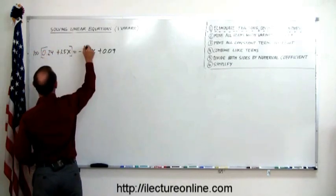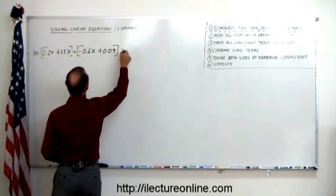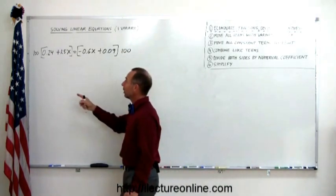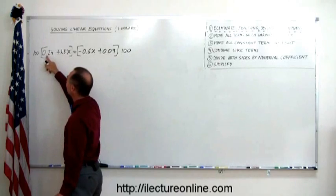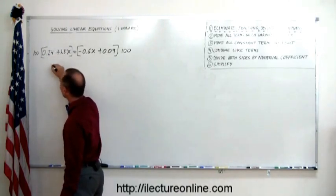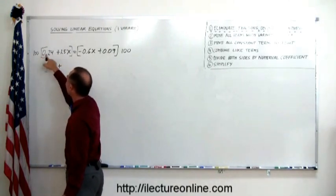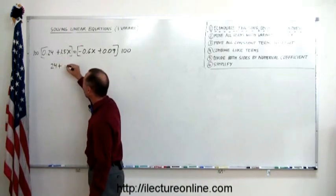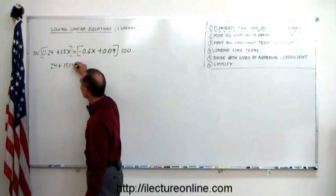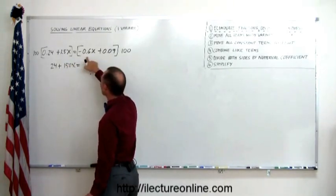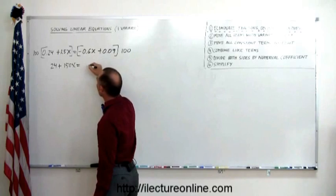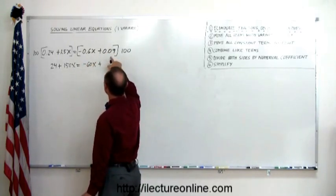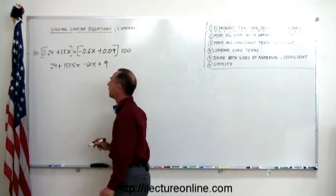So multiply this by 100, and multiply this here by 100. Okay, so let's do that. 100 times 0.24, that moves the decimal place over two places, so this becomes 24, plus 100 times 1.5, again, that moves the decimal place over two places, so this becomes 150x, equals 100 times 0.6, move the decimal place over two places, so that's minus 60x, plus 100 times 0.09, move the decimal place over two places, we get 9.